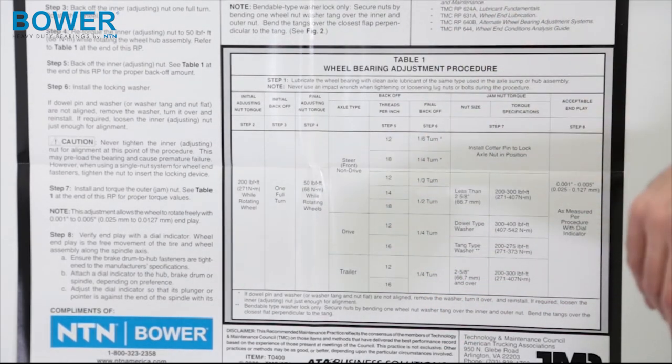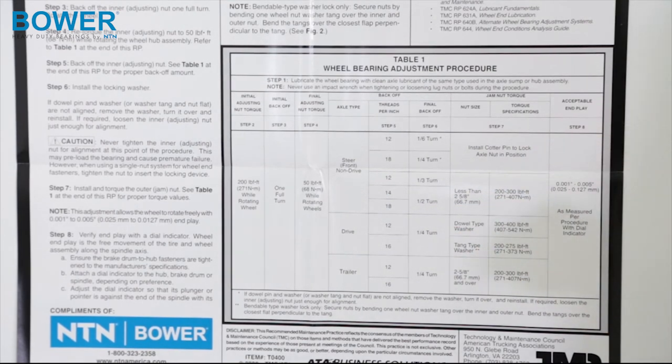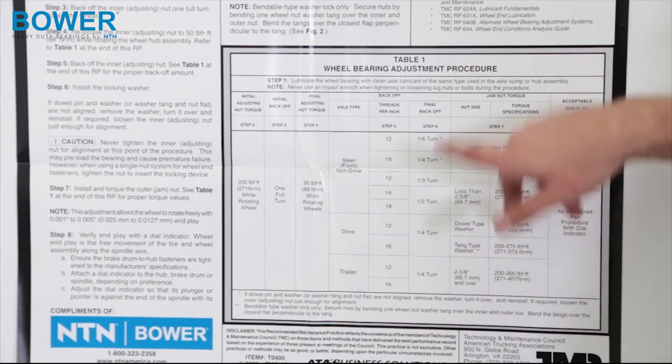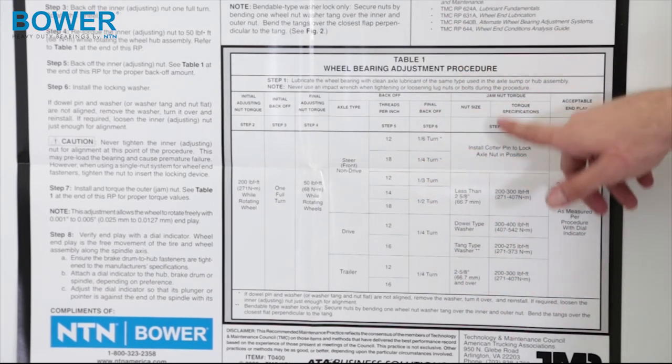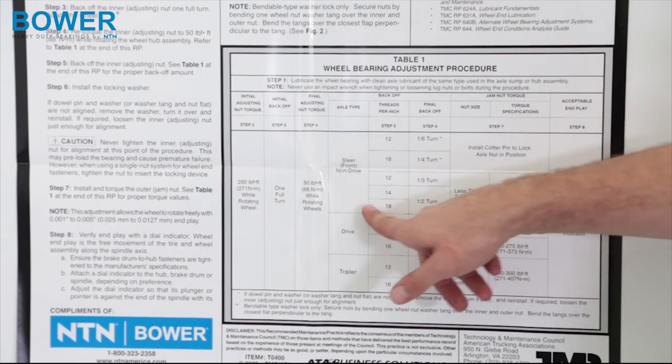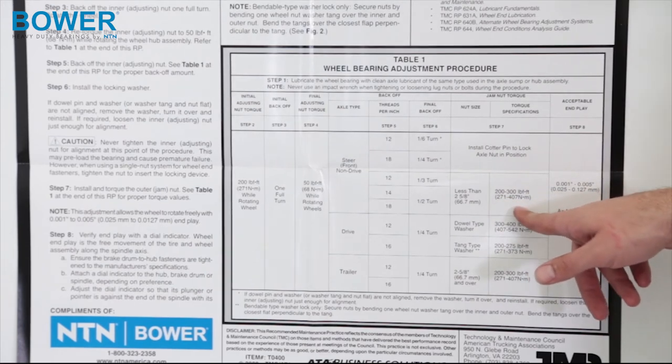So, we're going to back off our adjusting nut a half turn. And that should give us our appropriate end play. To keep that in place, we then put our washer on and then we jam and then we put down with our jam nut. And the easiest is just keep going over two to three hundred worth of foot, two to three hundred foot pounds worth of torque to jam on the nut.